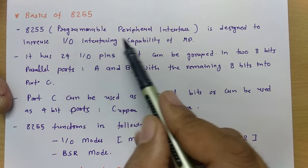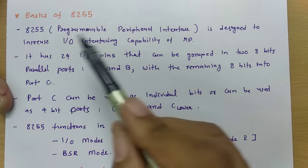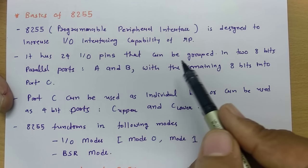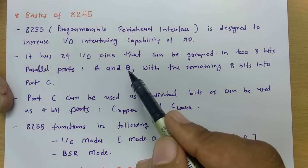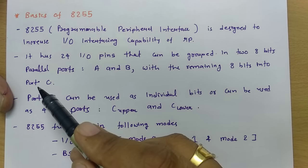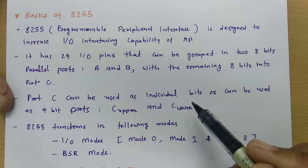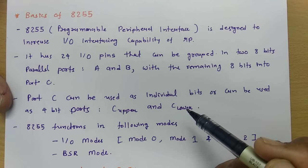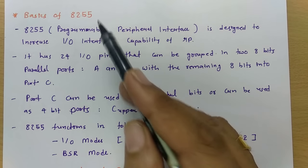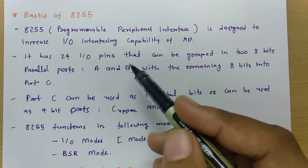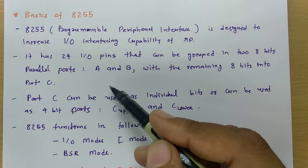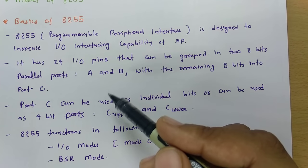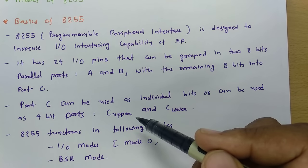8255 is designed to increase the input-output interfacing capability of the microprocessor. It has 24 input-output pins that can be grouped into two 8-bit parallel ports: port A and port B, and the remaining 8 bits with port C. Port C can be used as individual bits or grouped into an upper group and a lower group of 4 bits each.